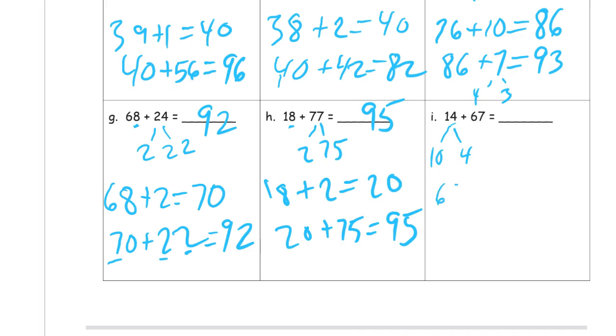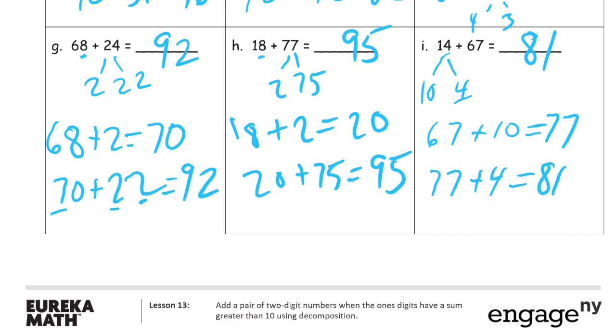Let's see. So, 67. And I'm going to add the 10 first. For 77. And then I'm going to add the 4 more. 81.